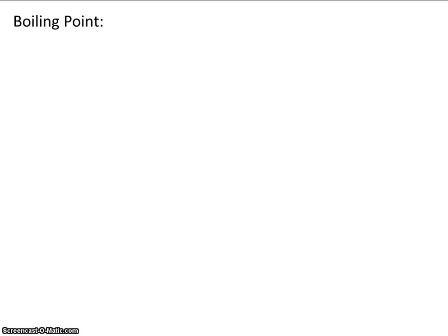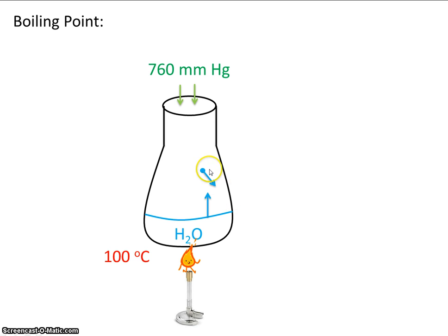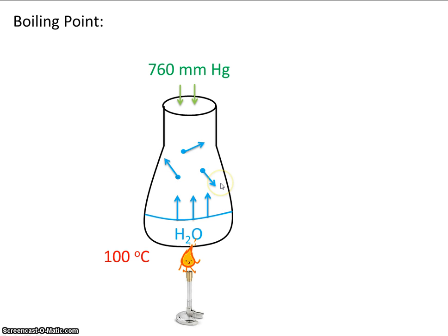Now let's take a quick look at boiling point. If we have a flask with water in it, the atmosphere would push down with 760 millimeters of mercury. Let's say we're going to heat this liquid up to 100 degrees C. As we begin to heat it, some of the water molecules evaporate, and as a gas they bounce around, collide, and exert a pressure. As we continue to heat it up hotter and hotter approaching 100 degrees, we have increasingly more gas molecules bouncing around, maybe exerting a pressure of 700 millimeters of mercury.